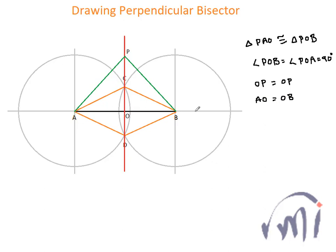That means AO is equal to OB. So, from side angle side congruency, these two triangles, triangle PAO and POB are congruent. That means side PA will always be equal to side PB.